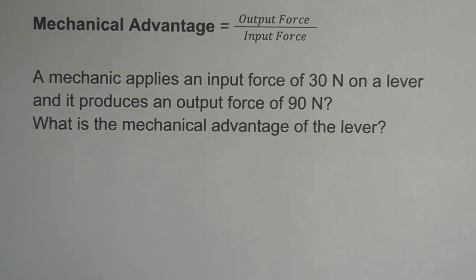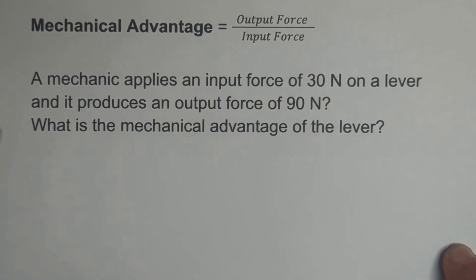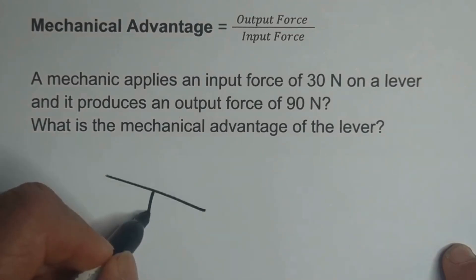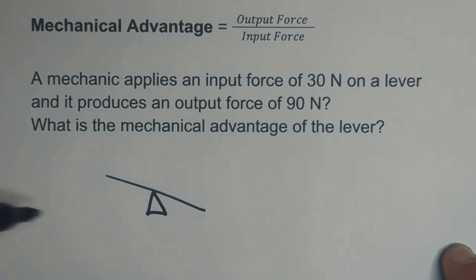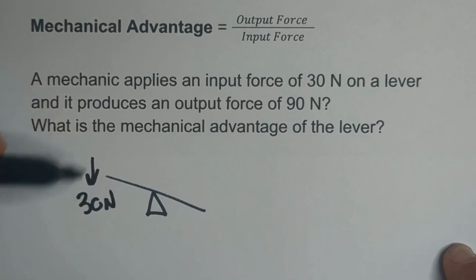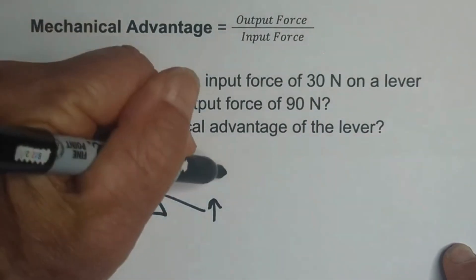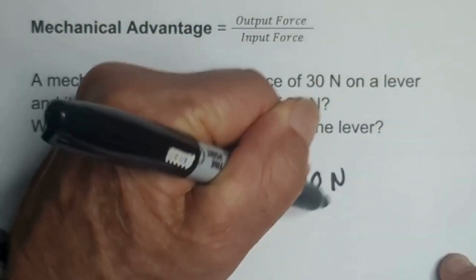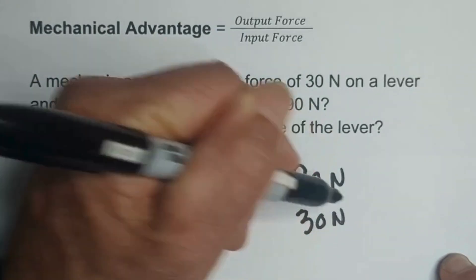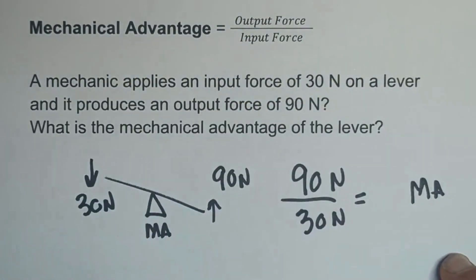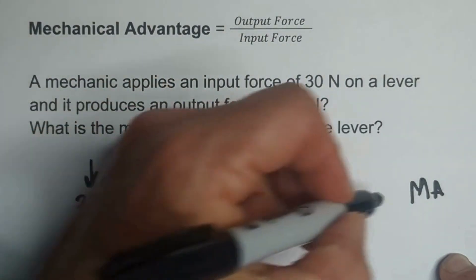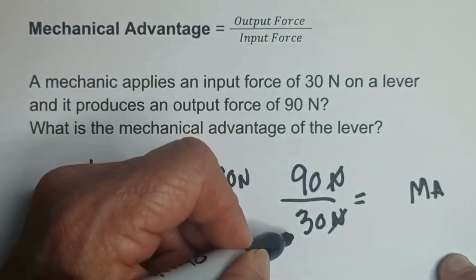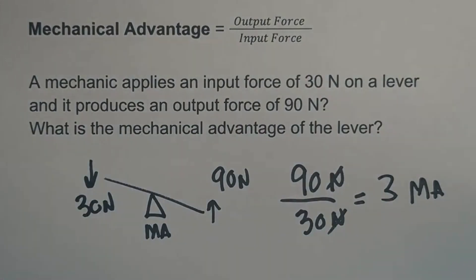A mechanic applies an input force of 30 newtons on a lever, and it produces an output force of 90 newtons. What's the mechanical advantage of the lever? We draw a lever with the fulcrum, an input force of 30 newtons, and an output of 90 newtons. We take the output force divided by the input force to get the MA. The newtons cancel, and 90 divided by 30 is 3, so the mechanical advantage is 3.